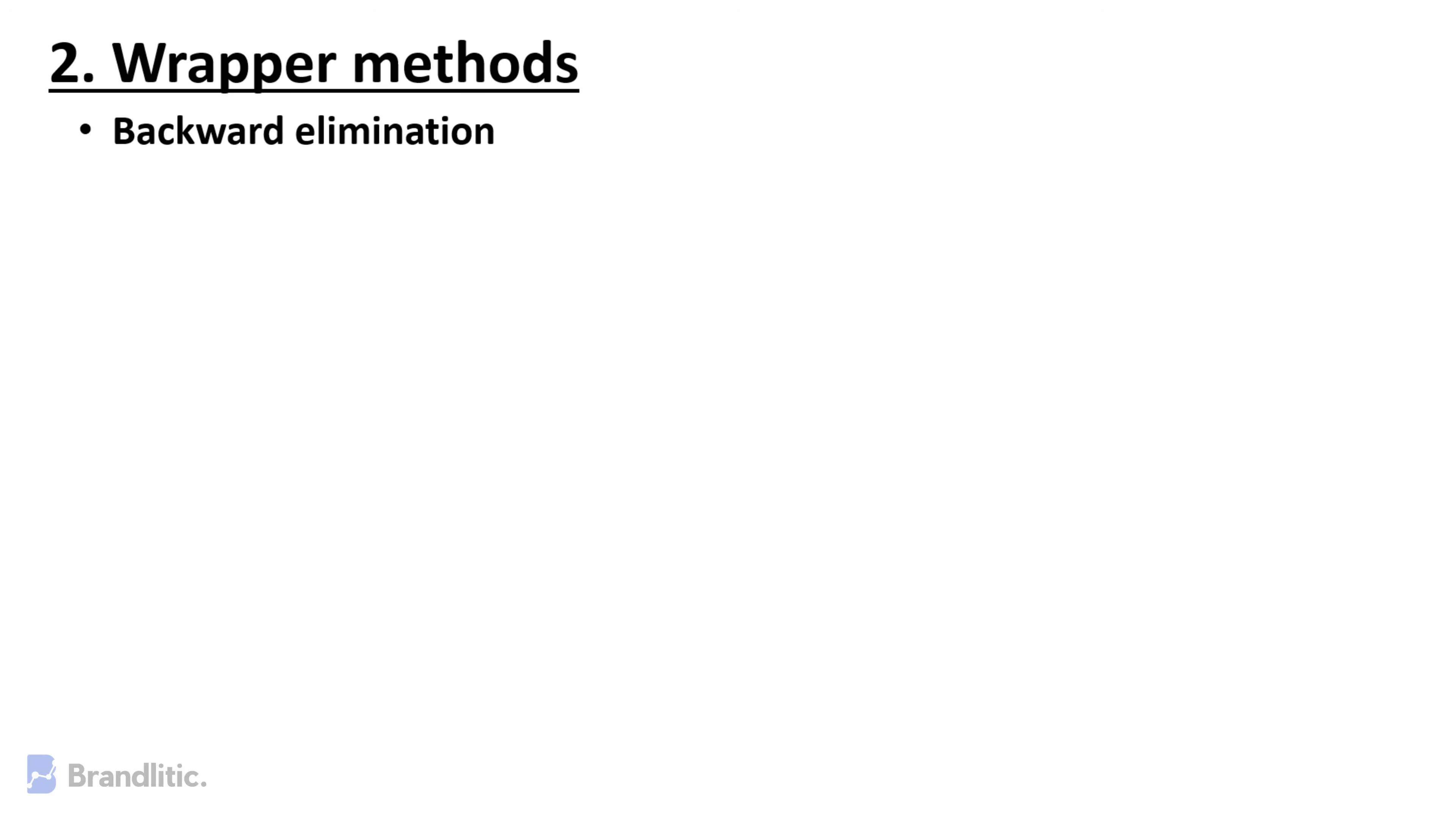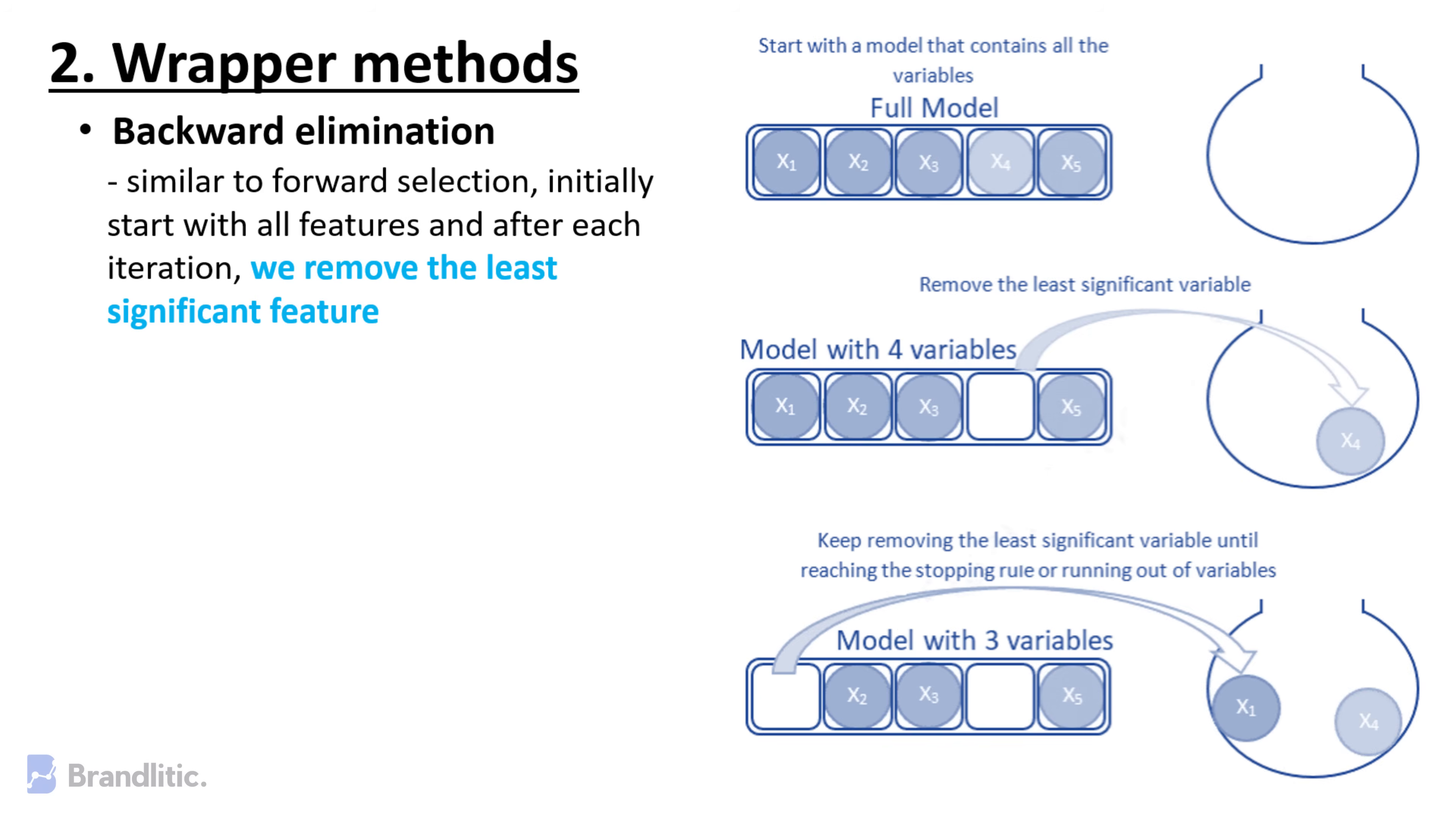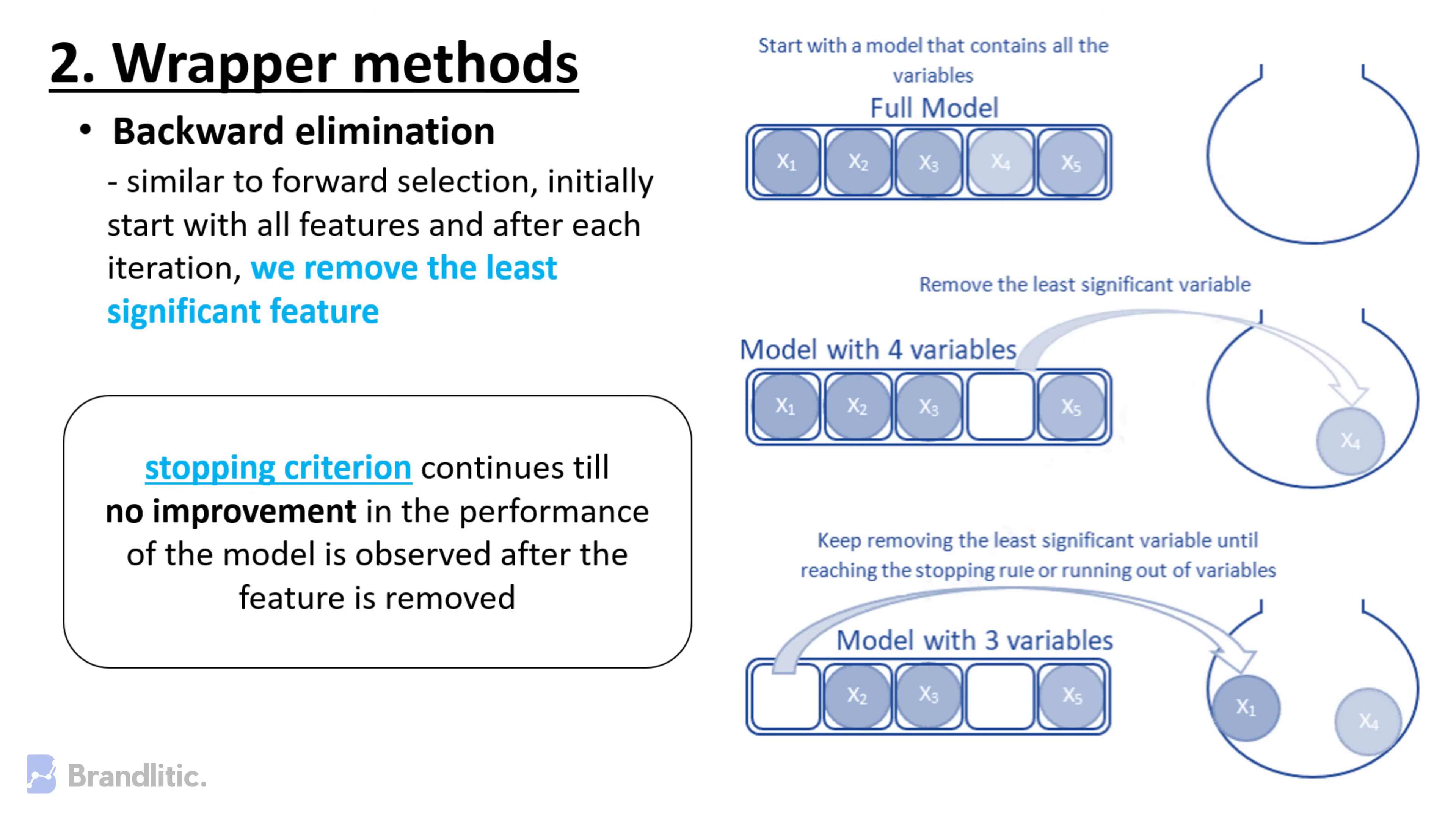Backward Elimination. Similar to forward selection, this method is also an iterative approach where we initially start with all features and after each iteration we remove the least significant feature. The stopping criteria continues till no improvement in the performance of the model is observed after the feature is removed.